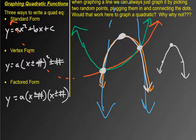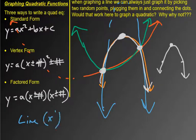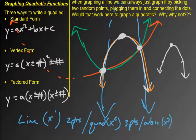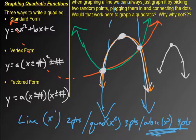There's actually a pattern here. A line, which is x to the first power, needs two points. A quadratic, which is x to the second power, needs three points. A cubic, which is x to the third, needs four points. And this just keeps going. We're not going to worry about cubics yet — that's basically our next unit — but for now you need three points to graph a quadratic.